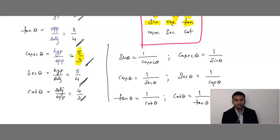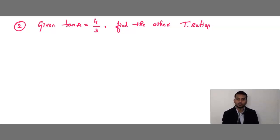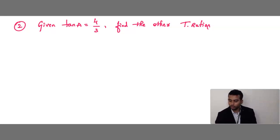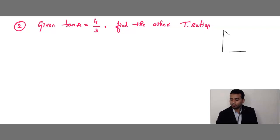Let me solve one more problem based on trigonometric ratios. Given: tan A = 4/3. Find the other trigonometric ratios. What we will do here: the first step is, if the diagram is not given, we draw it. We draw a right angle triangle. The name we give depends on the problem — here it says tan A, so A is the acute angle.